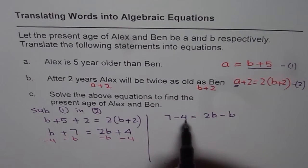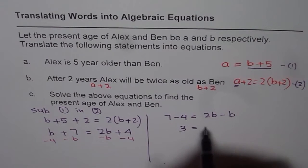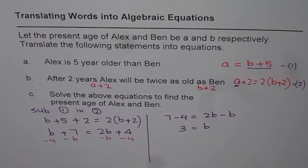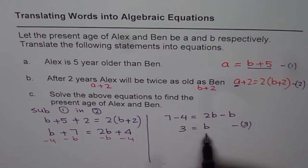7 minus 4 is 3, and 2B minus B is B. So B is 3. So that becomes our equation number 3. We know that Ben is 3 years old.